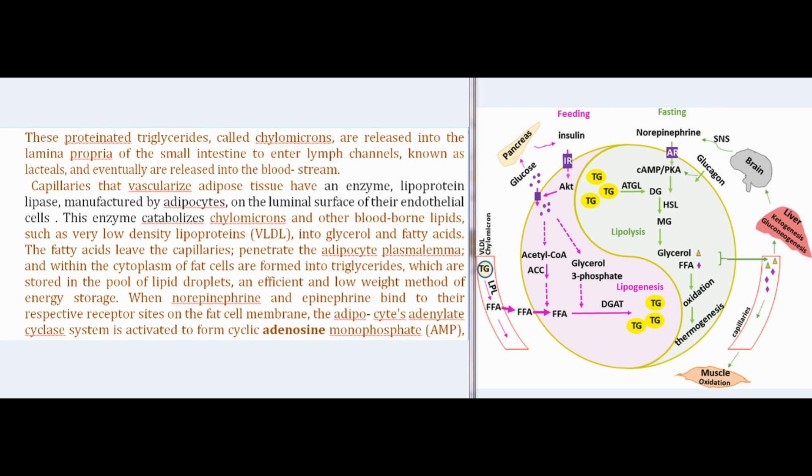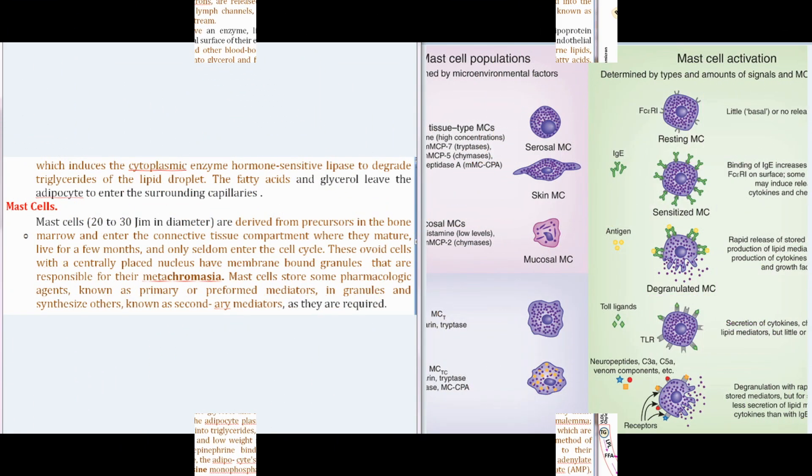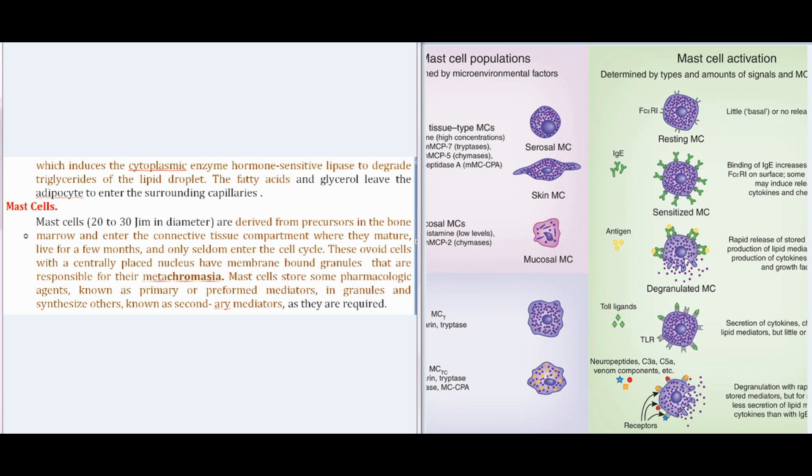When norepinephrine and epinephrine bind to receptor sites on the fat cell membrane, the adipocyte's adenylate cyclase system is activated to form cyclic AMP, which induces hormone-sensitive lipase to degrade triglycerides of the lipid droplet. The resulting fatty acids and glycerol leave the adipocyte to enter surrounding capillaries.